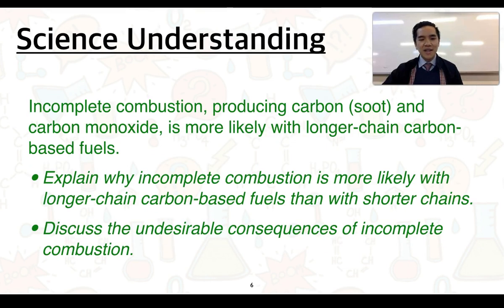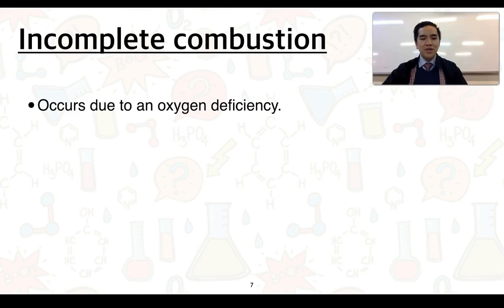For the next science understanding: incomplete combustion producing carbon or soot and carbon monoxide is more likely with longer chain carbon based fuels. Explain why incomplete combustion is more likely with longer chain carbon based fuels than with shorter chains. Discuss the undesirable consequences of incomplete combustion. Incomplete combustion occurs due to an oxygen deficiency.